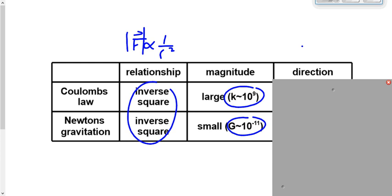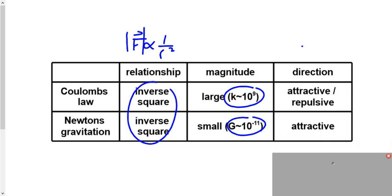What about direction? Gravity is always an attractive force. Coulomb's law force — the electric force — can be attractive or repulsive. Why the difference? What causes gravity? Mass. What causes electric force? Charge. How many types of mass are there? One. How many types of charge? Two. When you have two types of charge, it opens up the possibility of two types of force: attractive or repulsive. If we had two types of mass, maybe we'd have attractive or repulsive gravity as well.